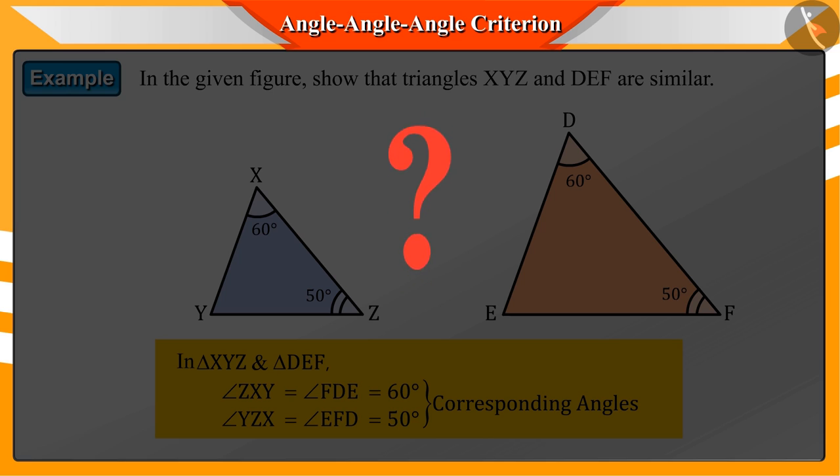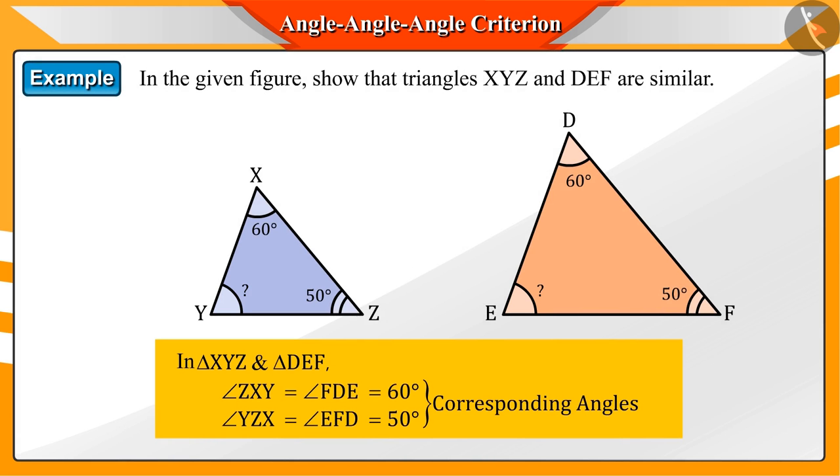Can we prove the similarity of triangles with the help of these two angles? No. For doing this, we need to know the third angle or the corresponding sides of the triangle. Can we find any other measurement of this triangle?